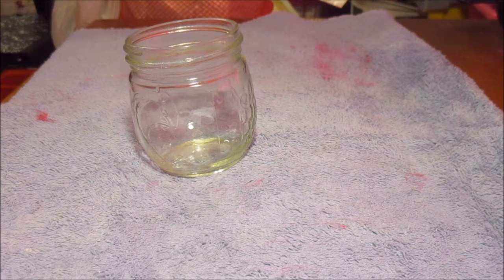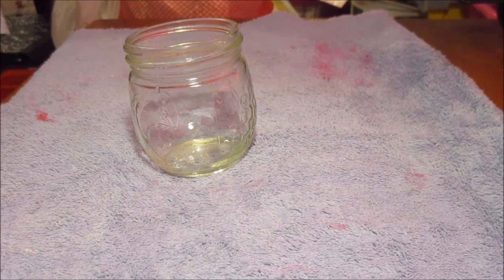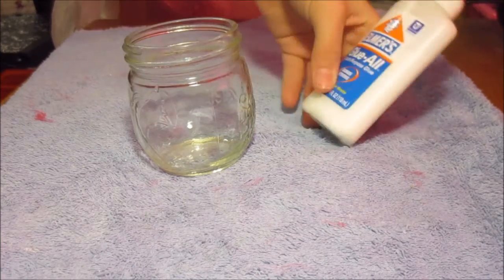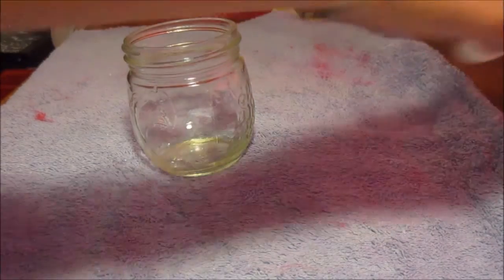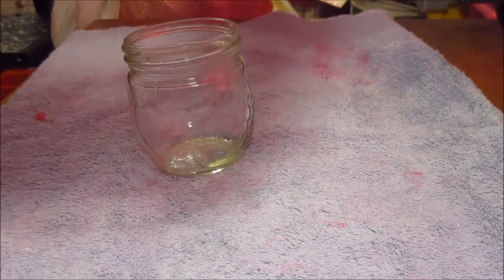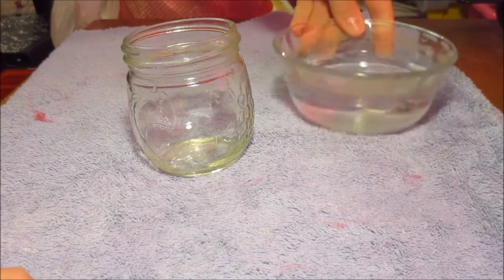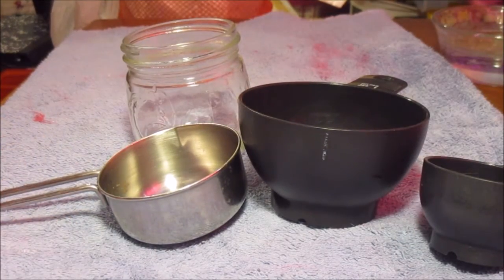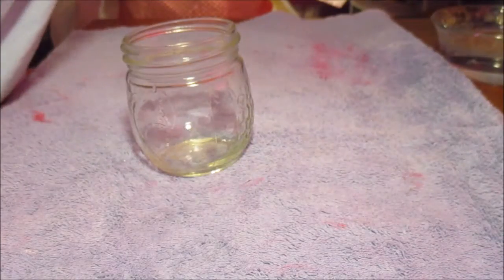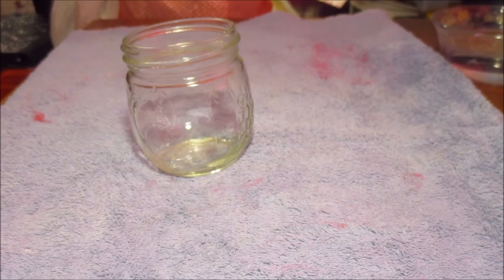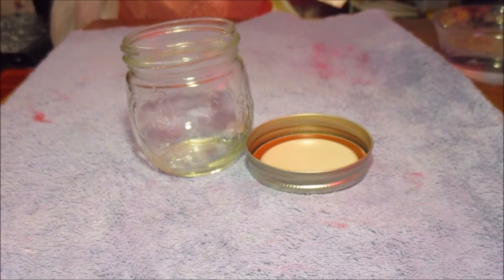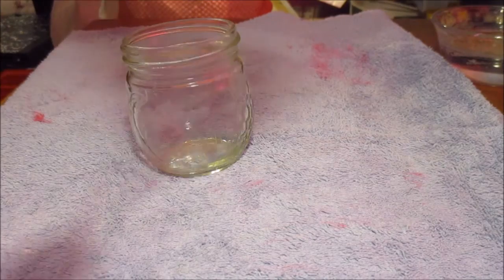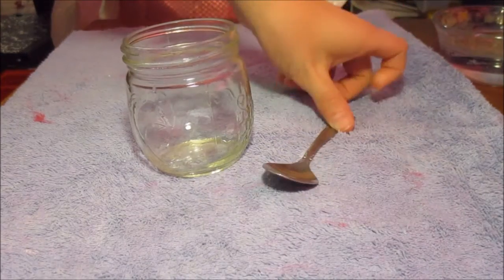So now that you know what mod podge is, let's get to how to make it. For this you're going to need glue, water, a couple measuring containers, and a container with a lid on it to seal it so that it won't dry out. And the last thing you're going to need is something to stir with. I just have a spoon.